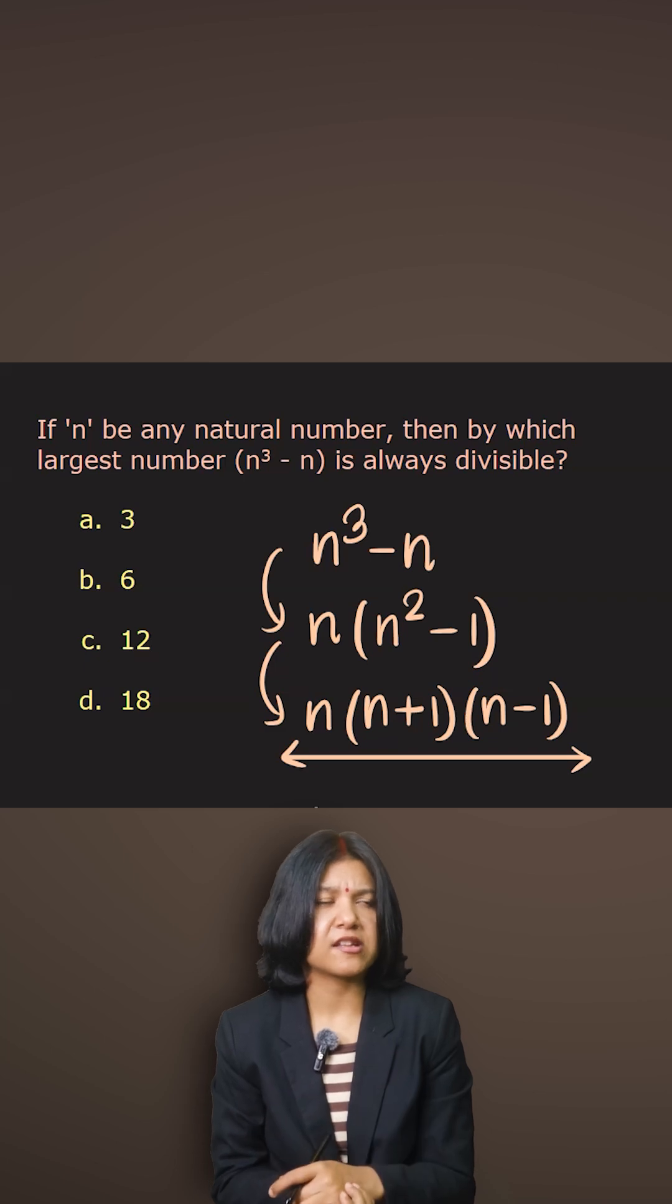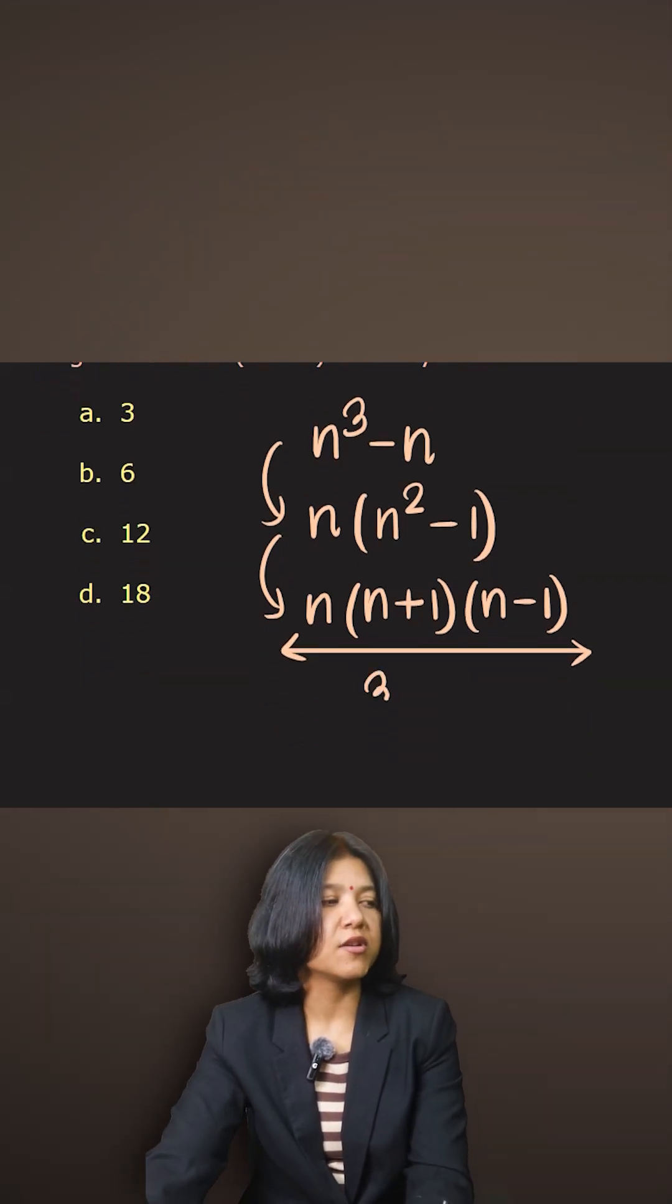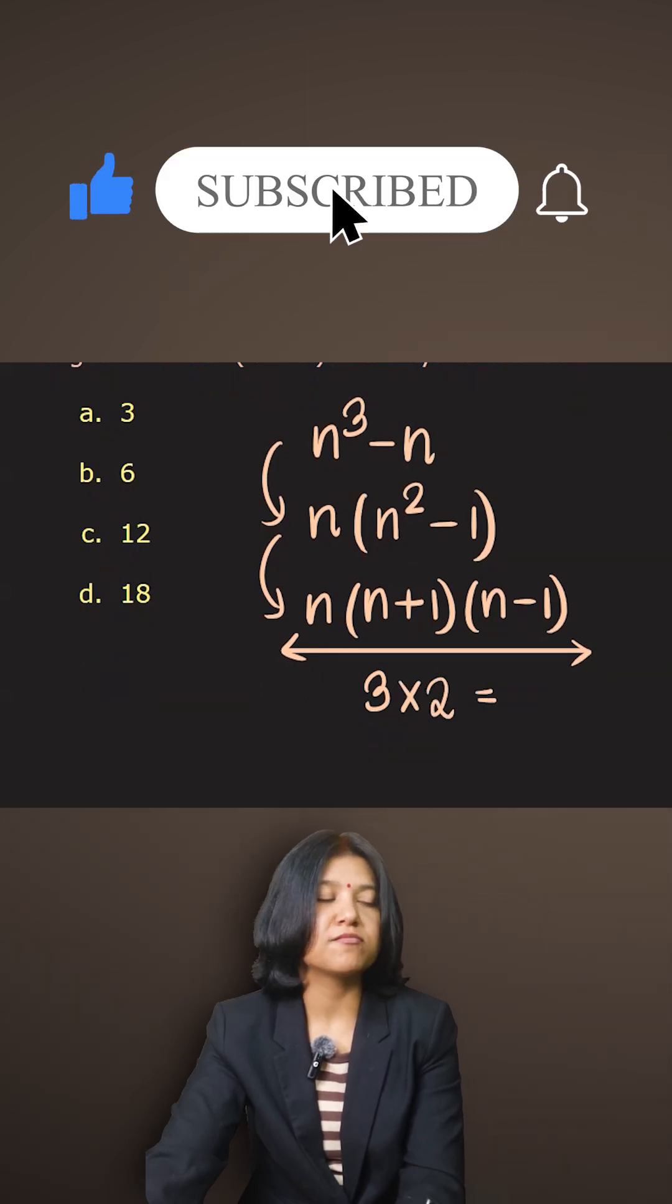Because you have three consecutive numbers, three will divide one of the numbers. So I have two options: it will be divisible by three and divisible by two as well. The highest number that will divide n³ - n is six. Six is the answer.